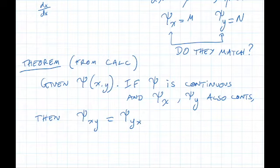In other words, the second order mixed derivatives are equal no matter which variable we differentiate first. This one we differentiate with x first and then y. This one we differentiate with y first and then x. And the theorem says that if psi and the first order partial derivatives are all continuous, then the second order derivatives are equal no matter which order we do them in.